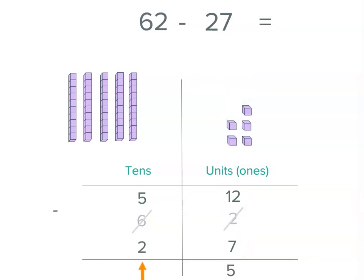Then we move left to our tens place. 5 of the tens minus 2 of the tens. So we cross those 2 out or remove them, and there are 3 tens left. So our answer is 3 tens and 5 units, or 35. 62 minus 27 equals 35.